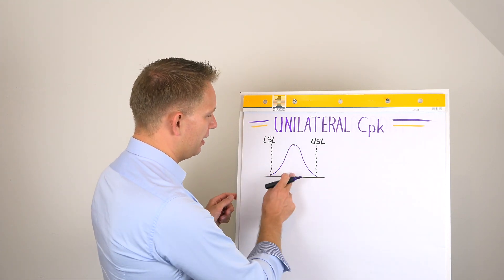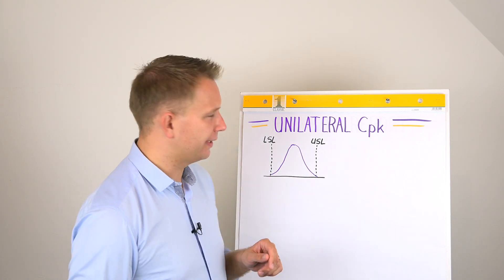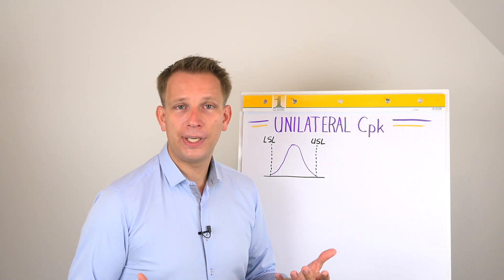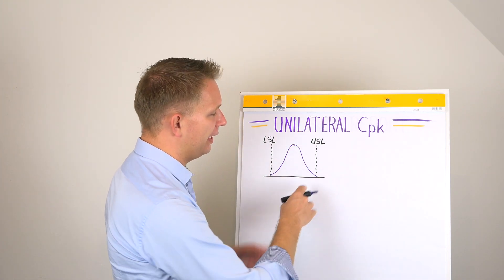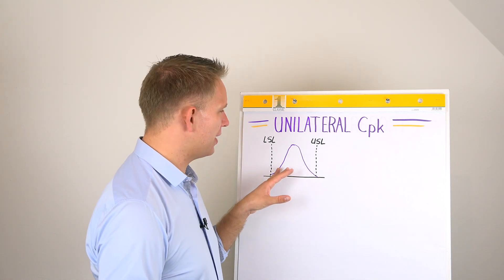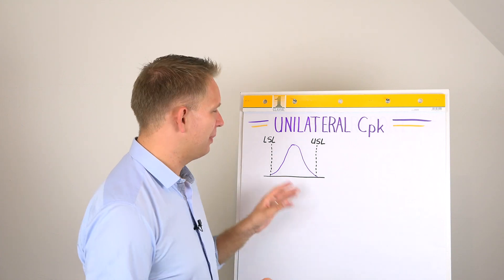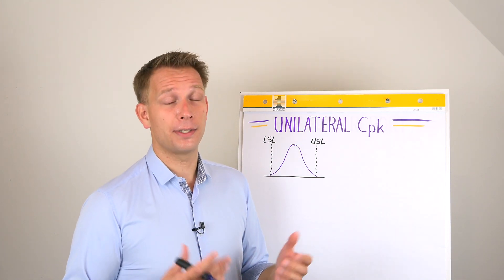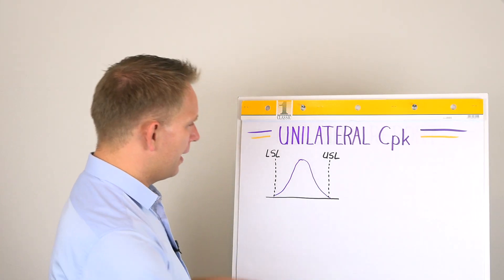If this is nicely normally distributed and about 99.7% of our products fall within 3 standard deviations on each side — so 6 standard deviations total — this process will have a CP of 1 and a CPK of 1.